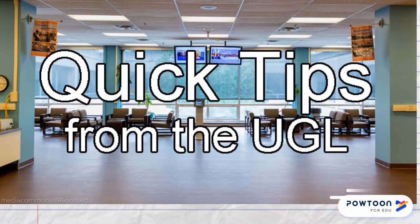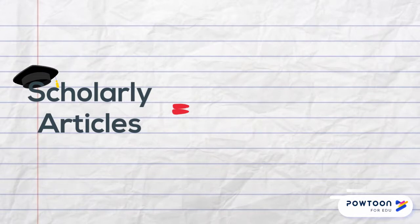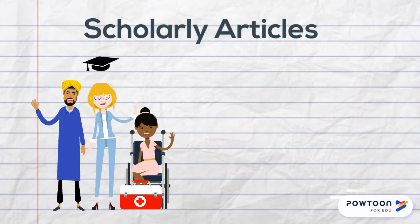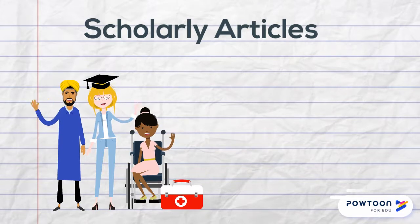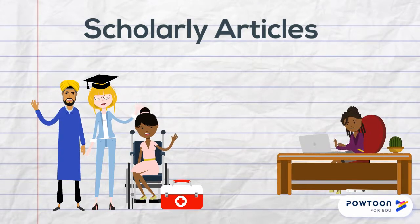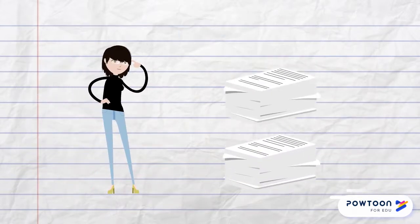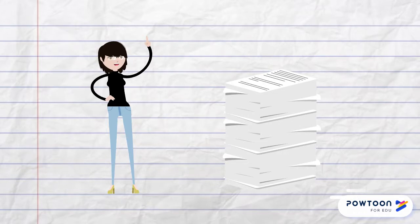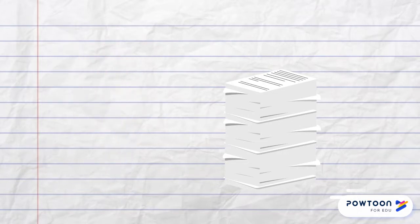Here's another quick tip from the UGL. Scholarly articles are often referred to as peer-reviewed articles. These articles are written by academics or professionals and also reviewed by other professionals to assure accuracy. Scholarly articles can be a little denser than what you are used to reading. Here are five easy steps to ensure success in reading a scholarly article.